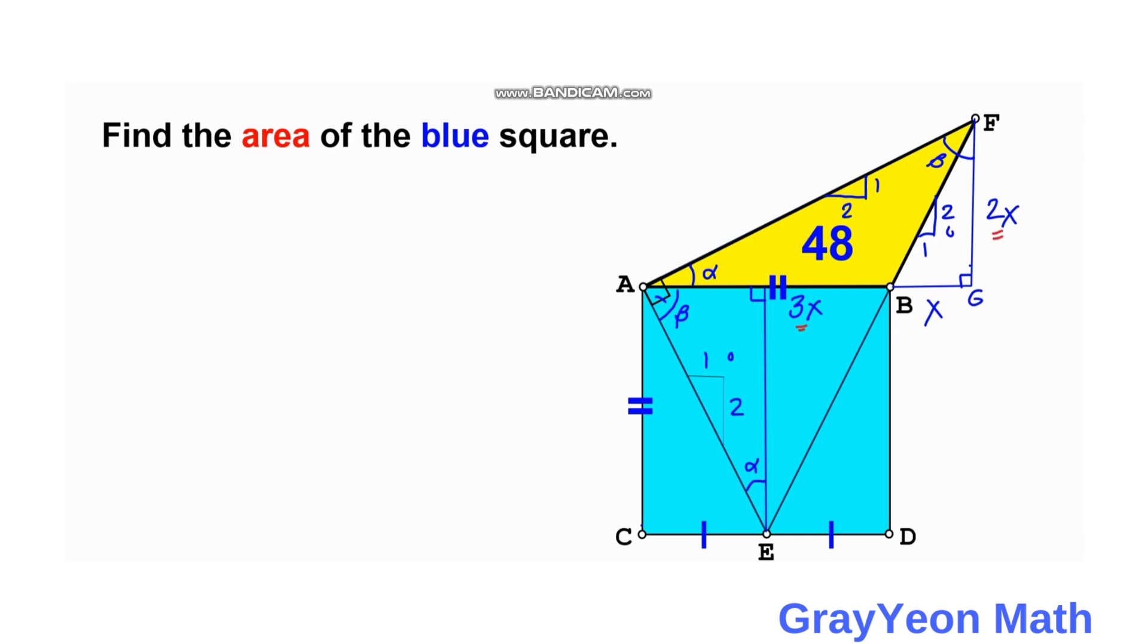If we write an equation about the area of the yellow triangle, we have 48 equals one-half times the base of 3x and the height of 2x. And we can cancel the 2 and 2, so we have 48 equals 3x squared.